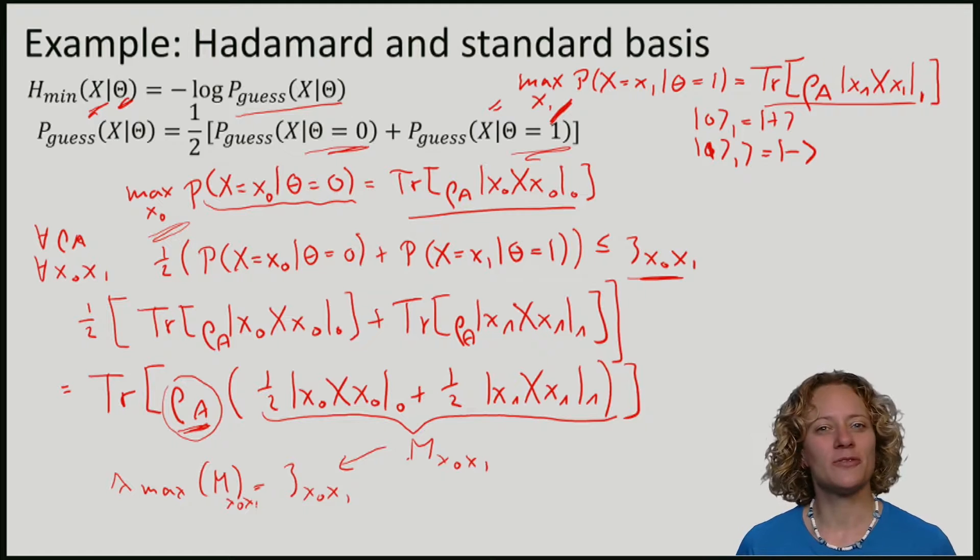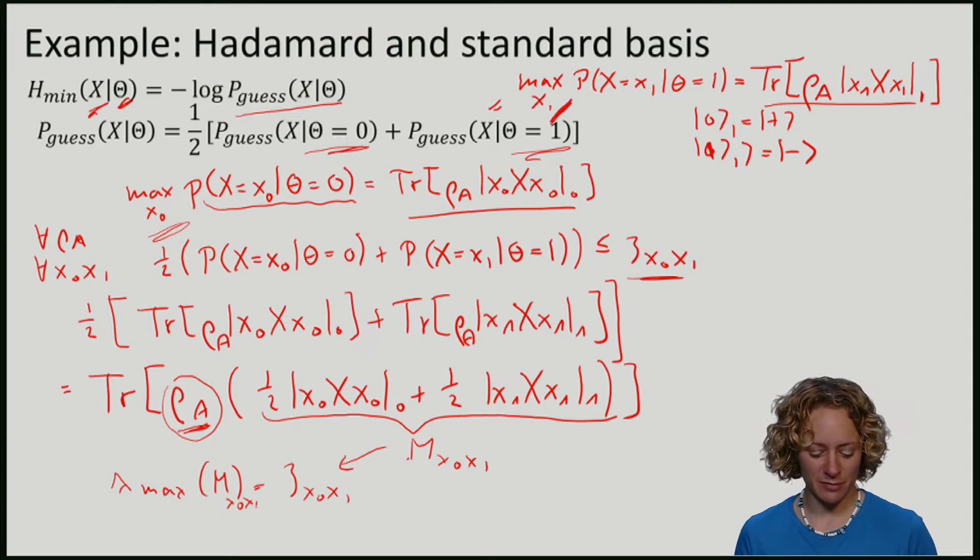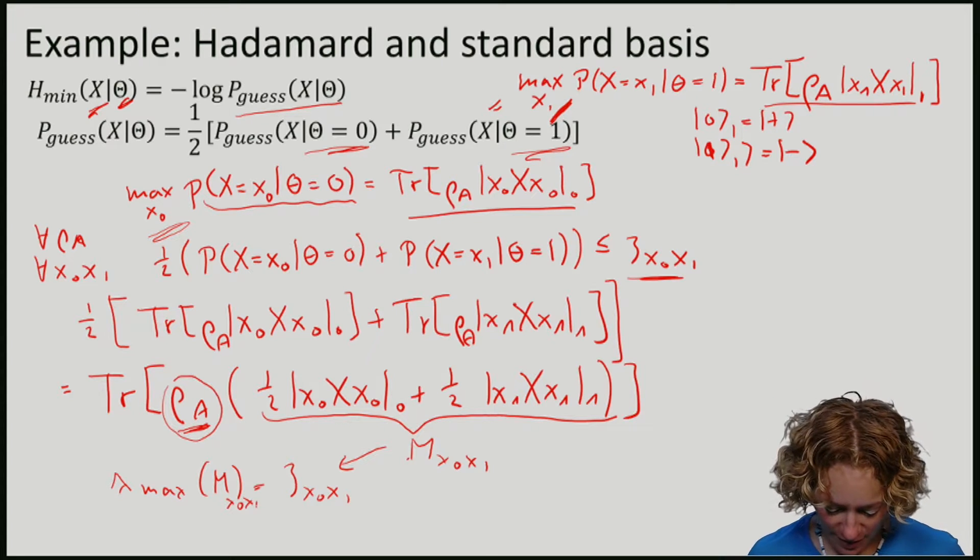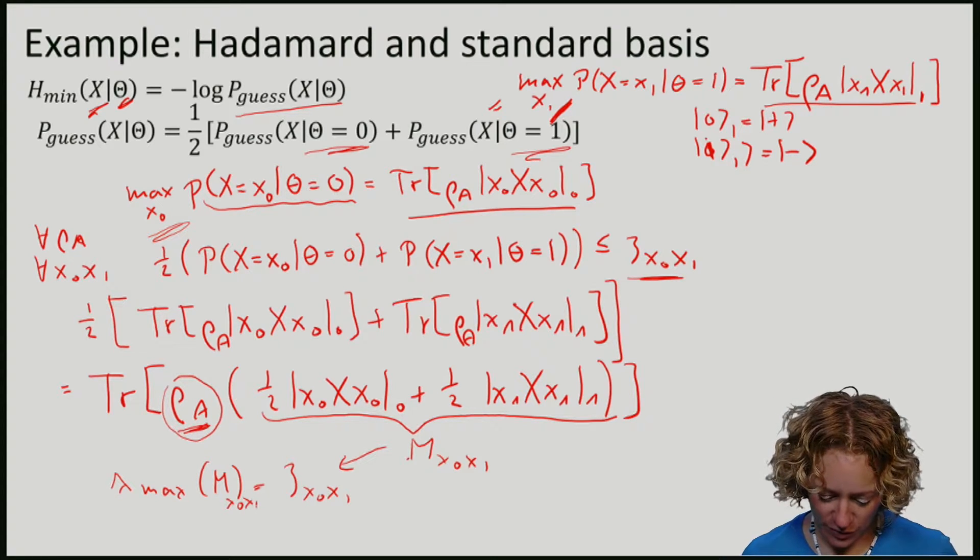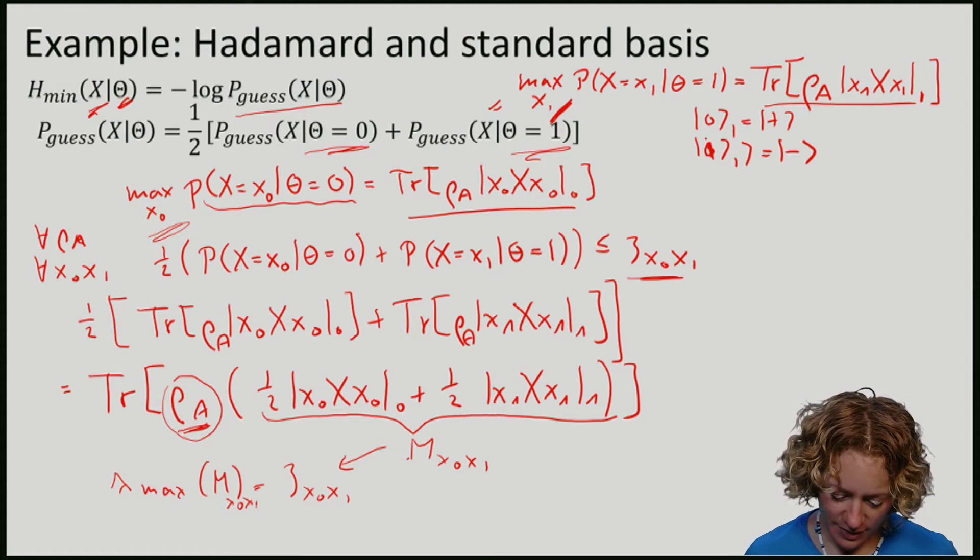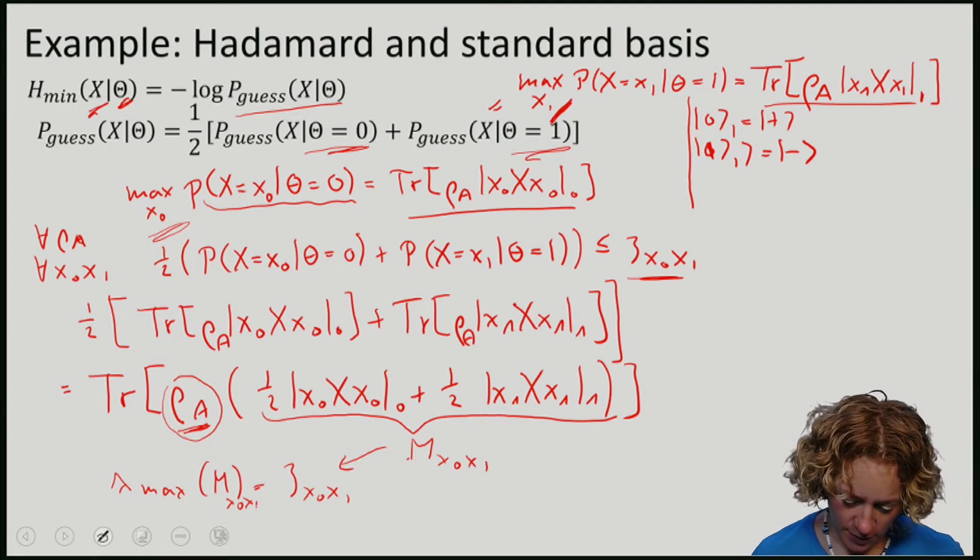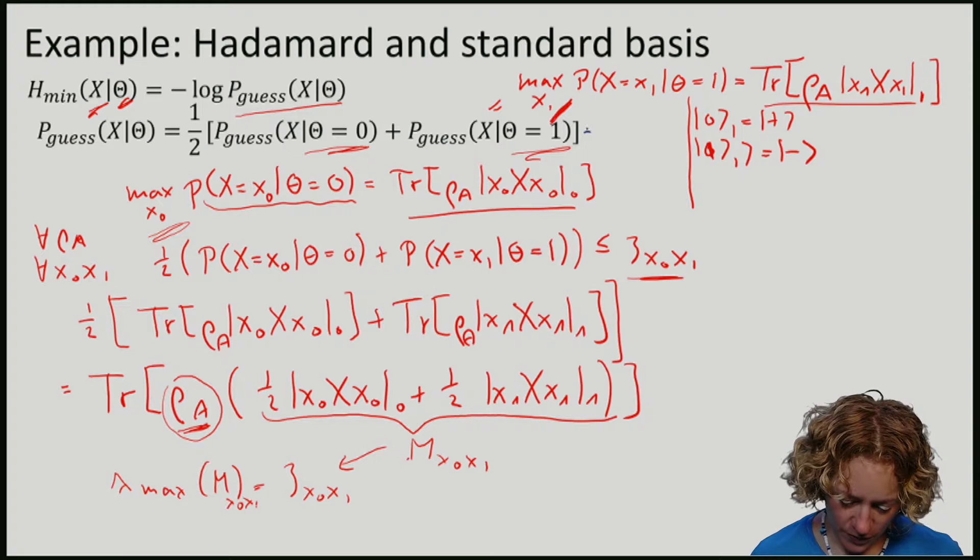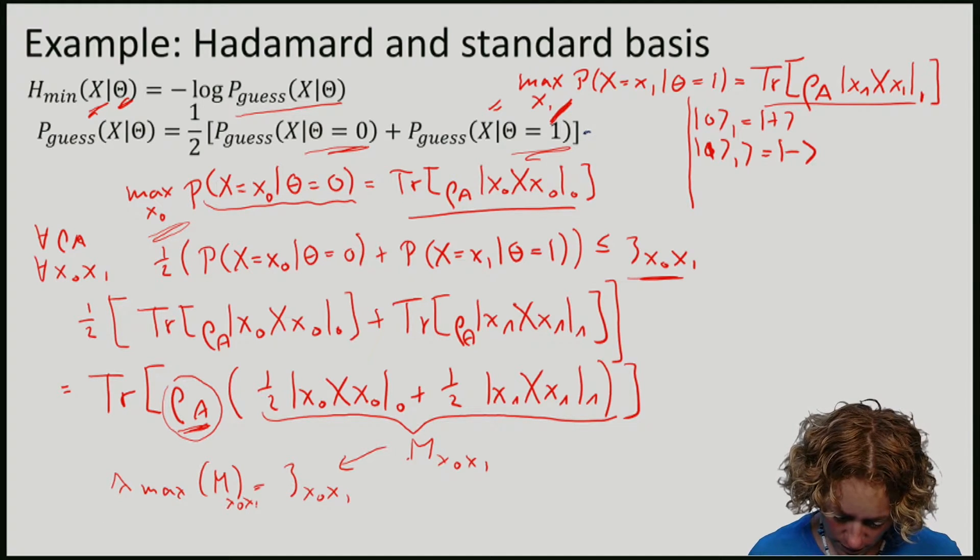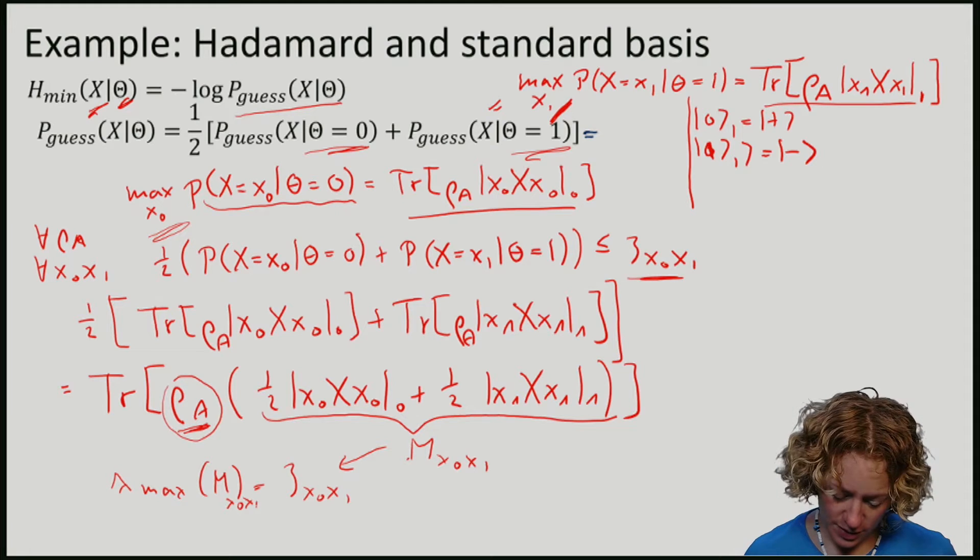Now we've seen how to find an uncertainty relation for the Hadamard and the standard basis. I'm not going to perform this precise calculation here, but I encourage you to compute these matrices for all combinations of possibilities, find their largest eigenvalue. And what we have thus is that this here, the expression that we wanted to calculate, is equal by choosing an appropriate state rho A.